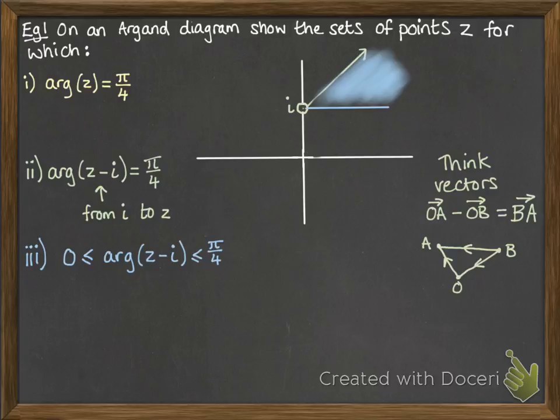That blue line at the bottom would be if the argument of z minus i was equal to 0. And the green line, which we did in part 2, was if it was equal to π/4. So that blue shaded region can be anywhere between those.